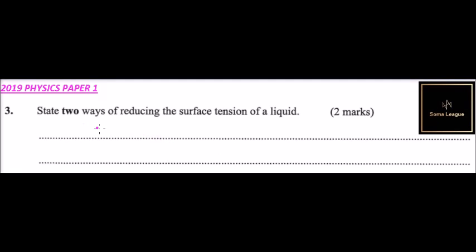This is question number three. We are told state two ways of reducing surface tension of a liquid. The surface tension is a curved part at the top of the liquid when it is in the container. It may be curved inward or outward, that is it may be curved like that or it may be curved like that.